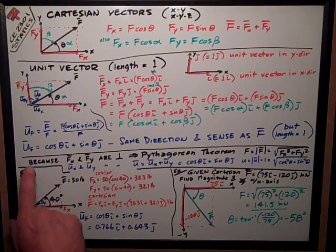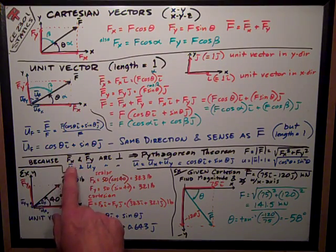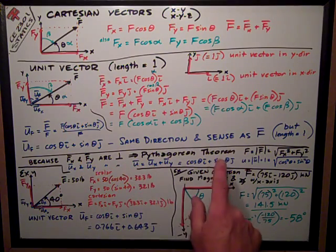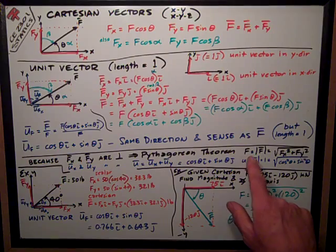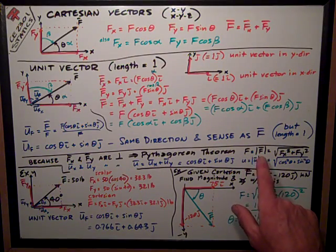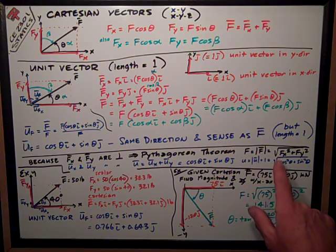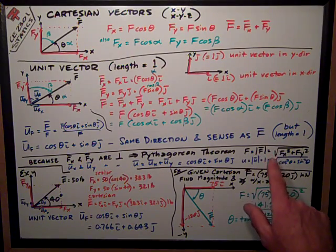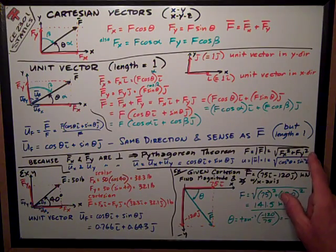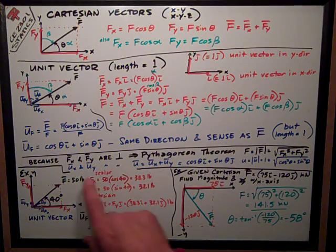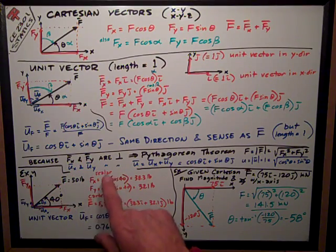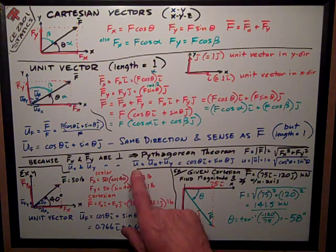Down here, I have a statement. Because fx and fy are perpendicular to each other, I can use the Pythagorean theorem. The scalar value of f, which is the magnitude of the vector f, I can say that it is the square root of the sum of the squares of the fx and fy components.